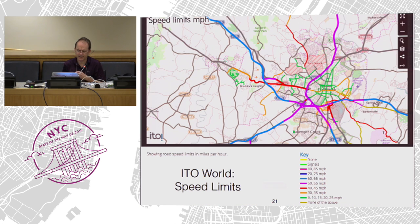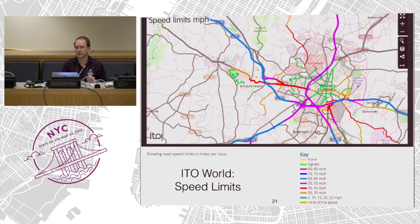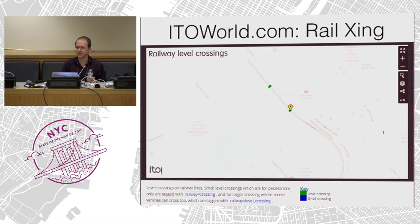A company out of Britain called ITO World has 150 different views for QC and data. One is speed limits in miles per hour. Another is railroad crossings — I screwed up some railroad crossings and I'm trying to make amends. There is a very subtle distinction between a level crossing and a crossing. Again, the wiki is your friend.